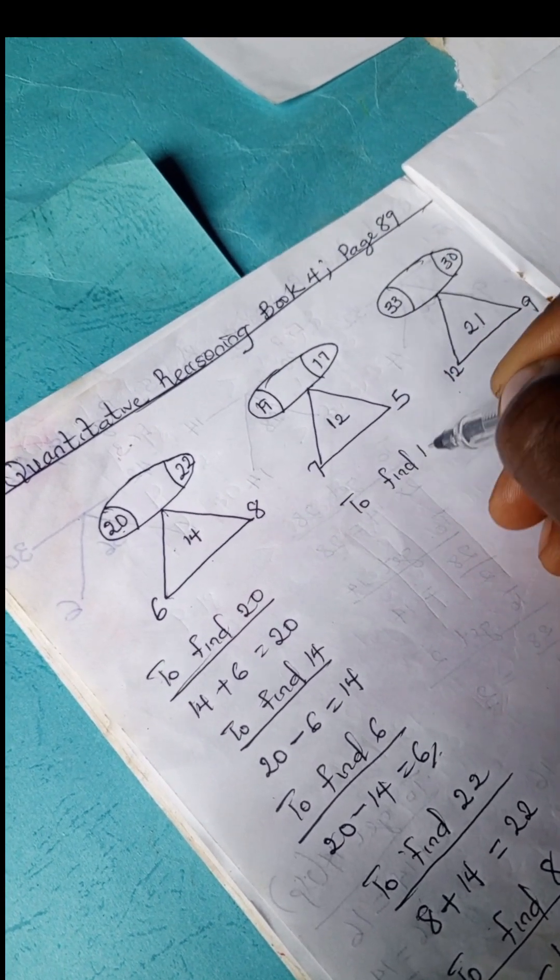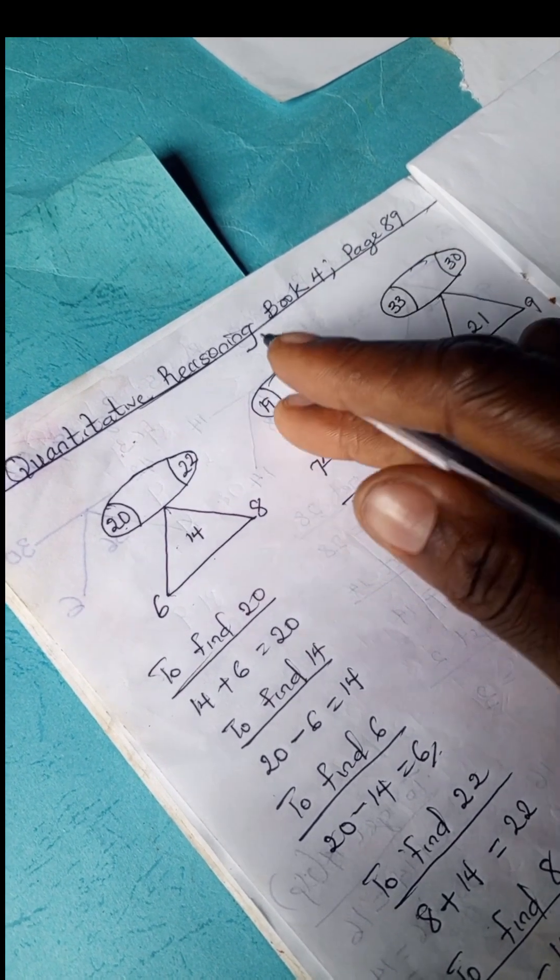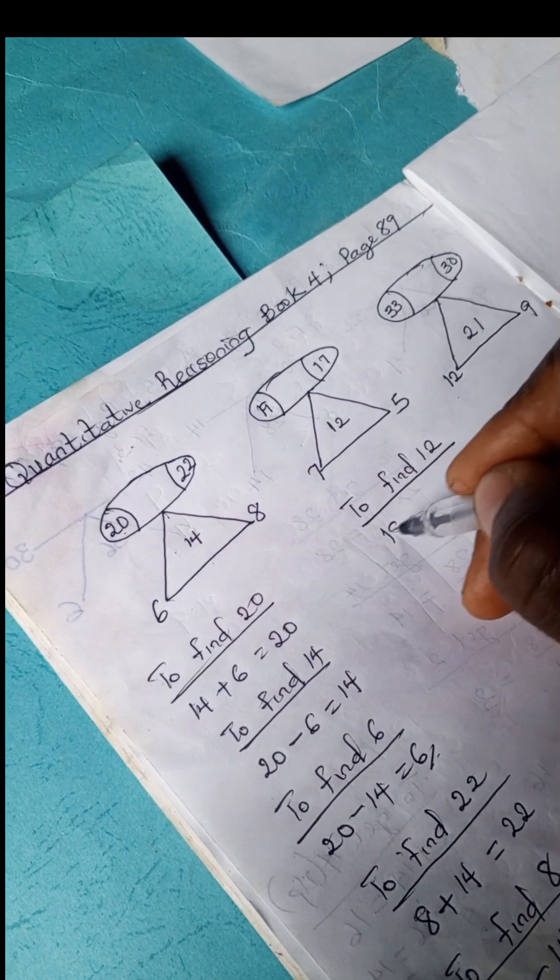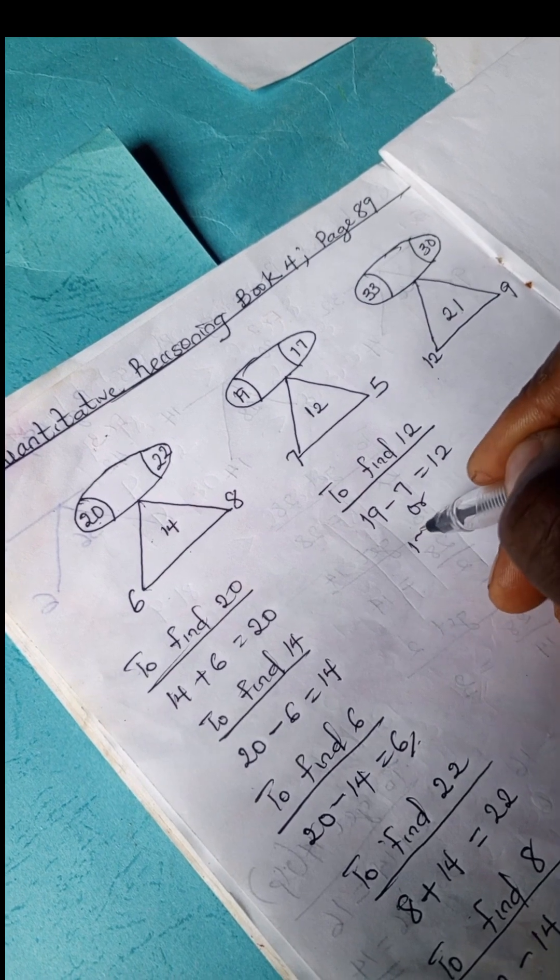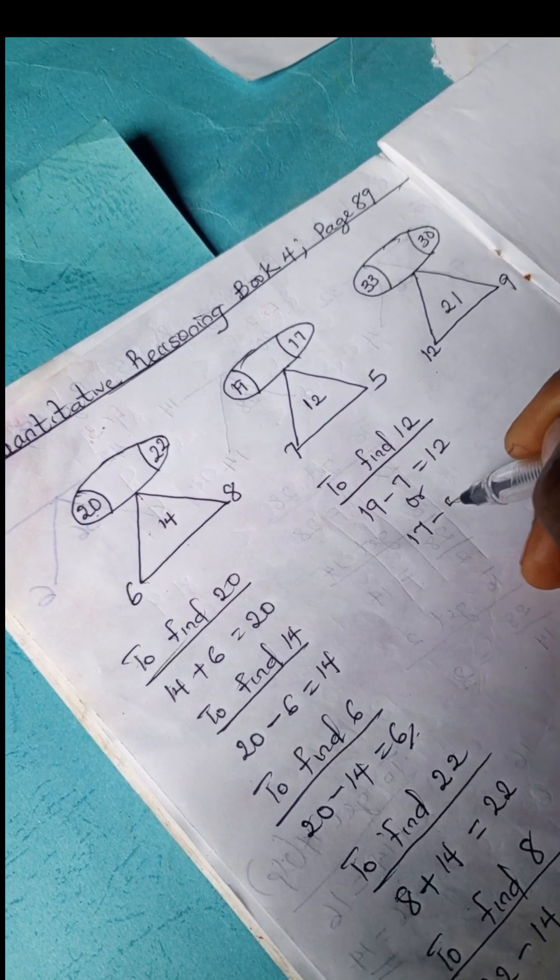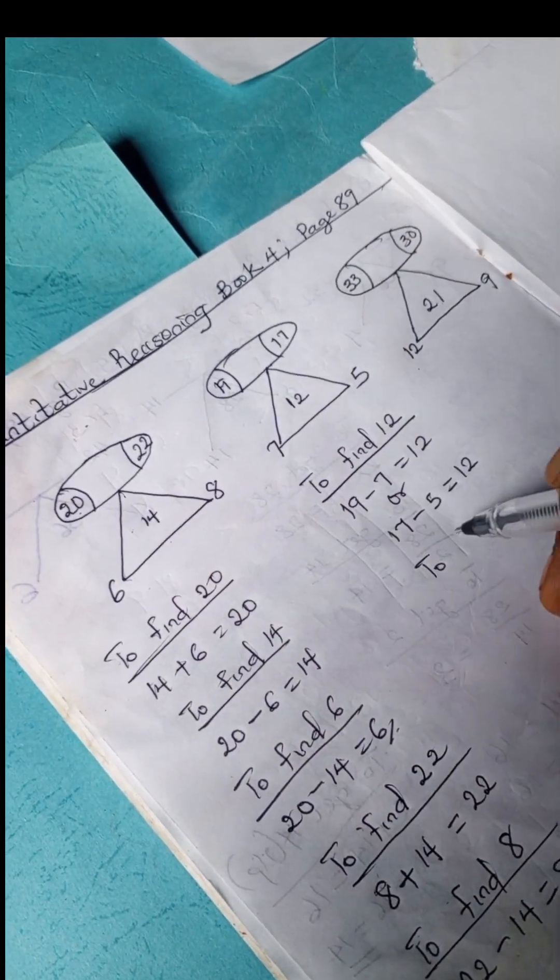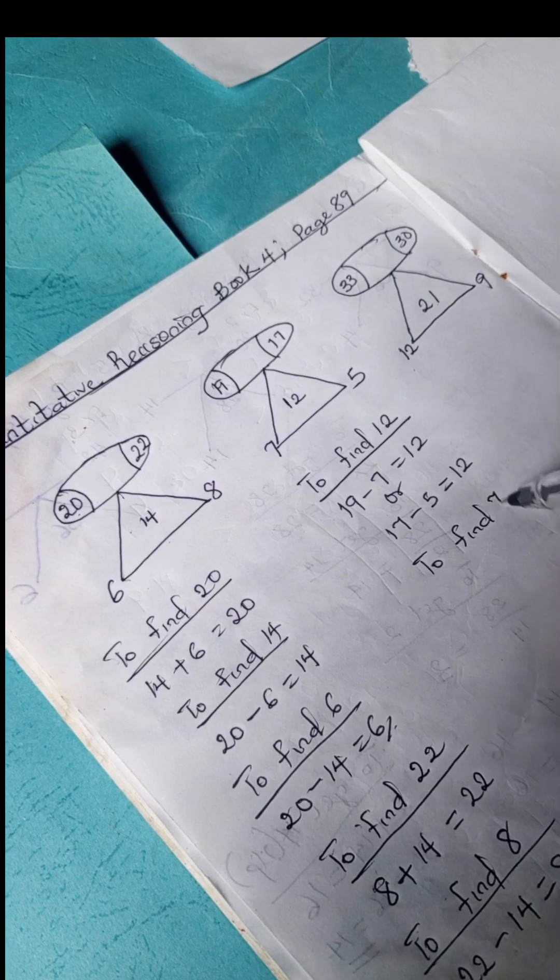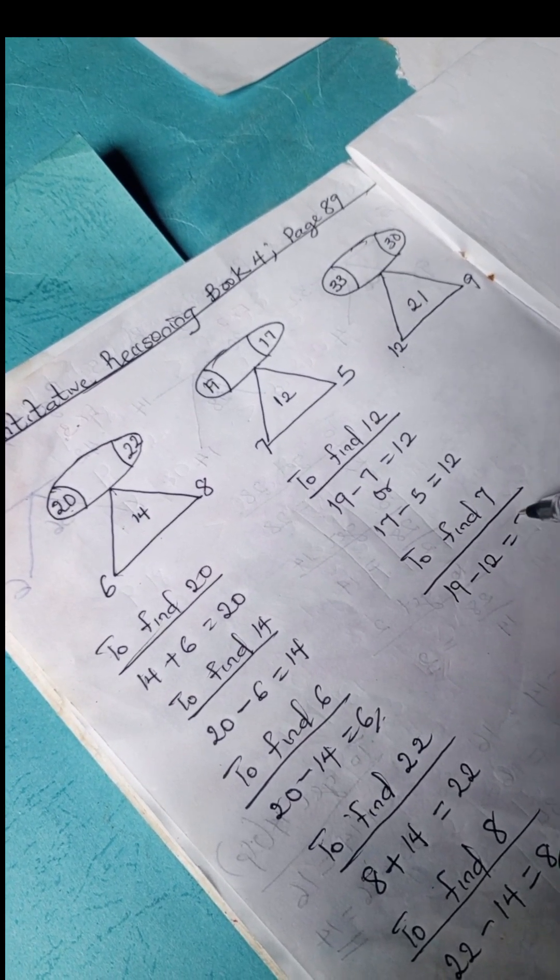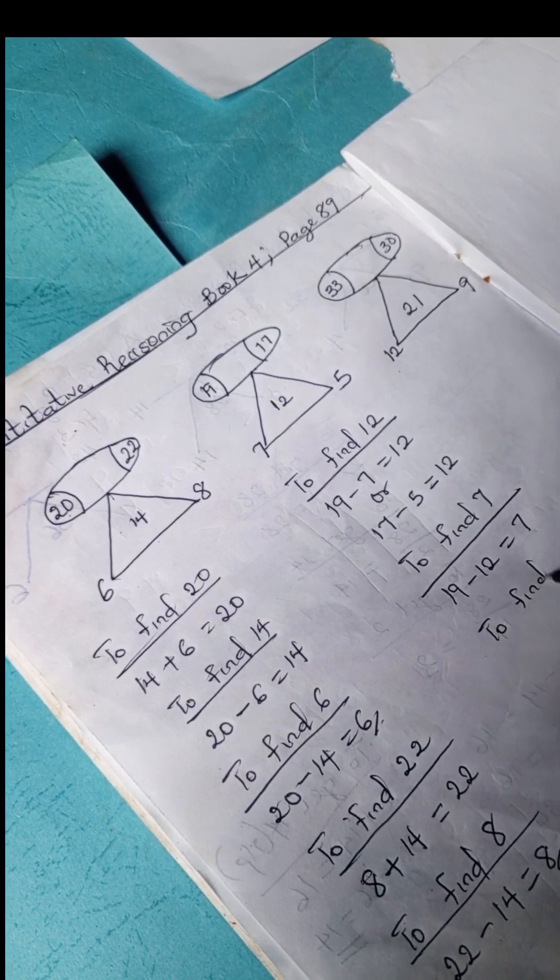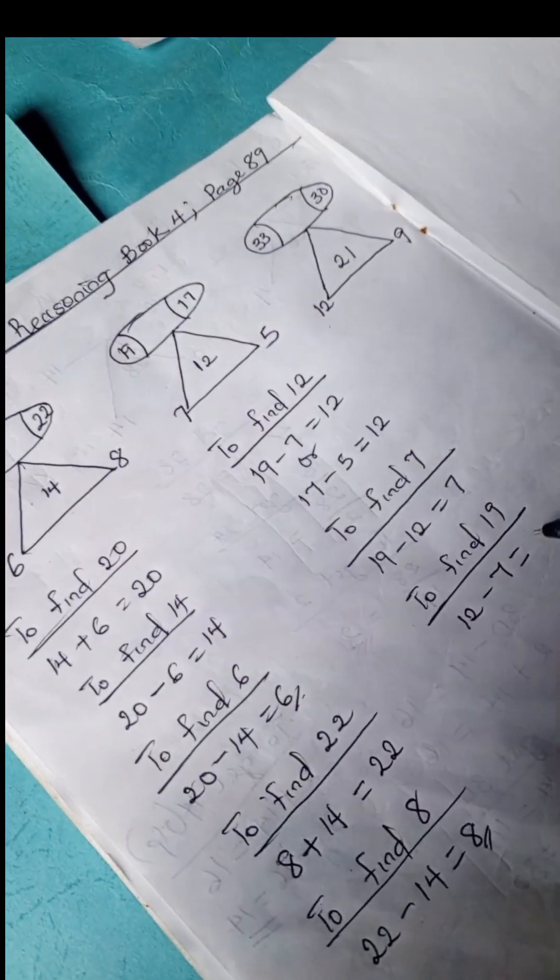To find 12, we have either we use this spot or this spot. So we have 19 minus 7 is 12, or we can see 19 minus 5 is 12. So we have 19 minus 5 is 12. Same goes for this, right?